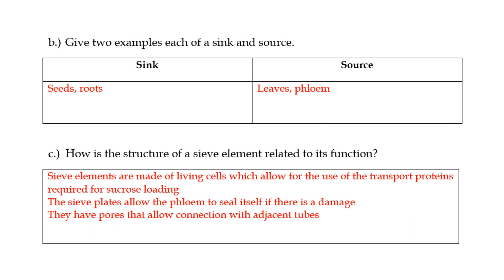So sieve elements are made of living cells or basically semi-living cells. They have companion cells that are living and enable the transport of sucrose effectively. They have sieve plates as well in between the different sieve tubes. And what the sieve plates do is that if the phloem is injured in any way, like if it is damaged in any way, the sieve plates can allow the phloem to seal itself. So they're like these plates that are in between.